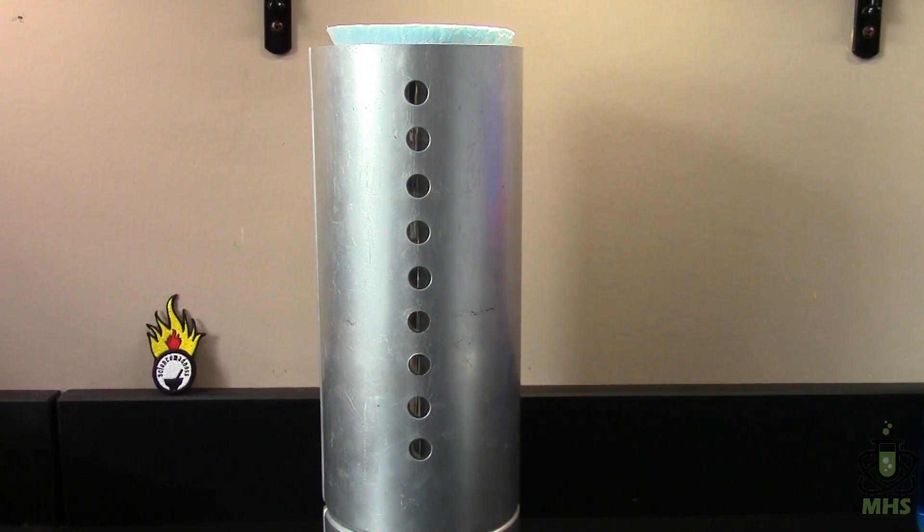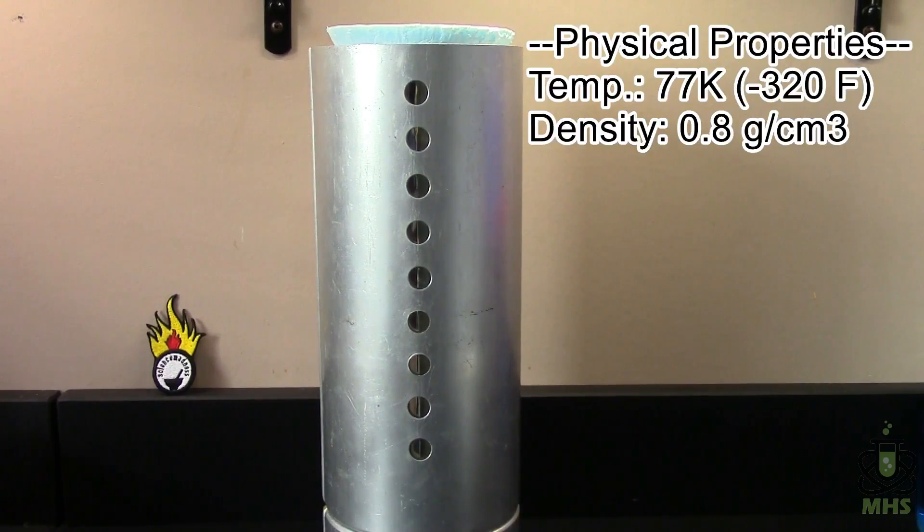So this liquid is only 77 degrees above the coldest possible temperature. It's a little bit lighter than water. It's got a density of 0.8 grams per milliliter, and water is 1, so it's 80% as dense as water.